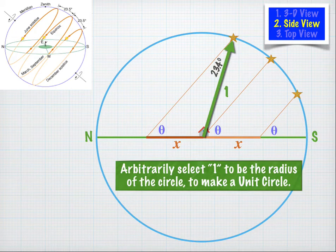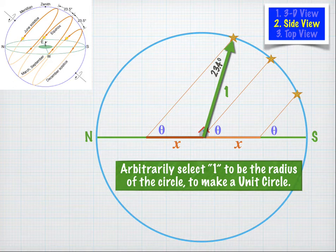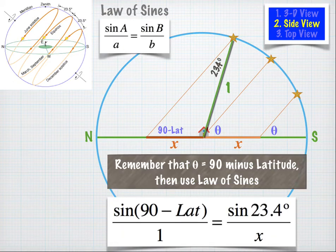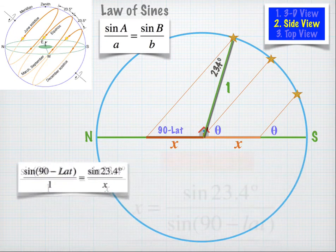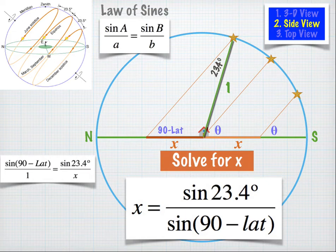To figure out X, we form a triangle and arbitrarily label one segment as 1 — making it a unit circle, which simplifies the trig. We now have a triangle with two angles labeled and two sides labeled, one of which is X. Using the law of sines and solving for X: X equals sine(23.4°) divided by sine(90° minus your latitude). We file this for future reference — when we go to the top view, we'll need to know X.